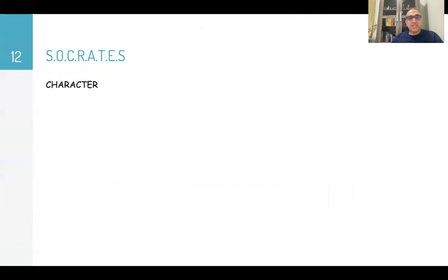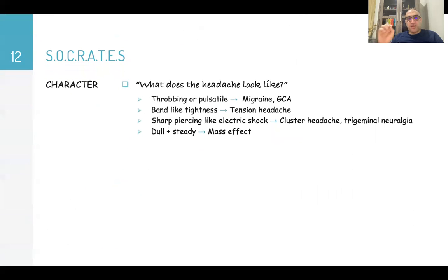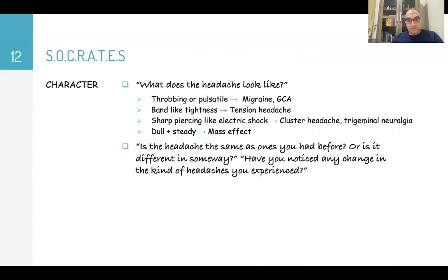For character: 'What does the headache feel like?' Throbbing or pounding suggests migraine or giant cell arteritis. Band-like tightness suggests tension headache. Sharp, piercing, electric-shock-like suggests cluster headache or trigeminal neuralgia. Dull and steady pain suggests a mass effect.